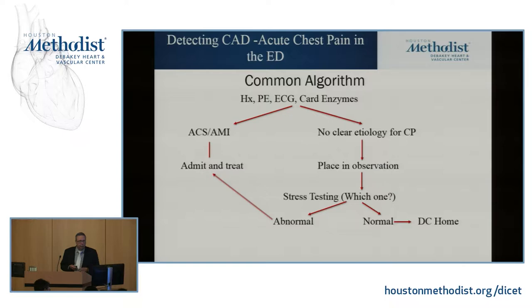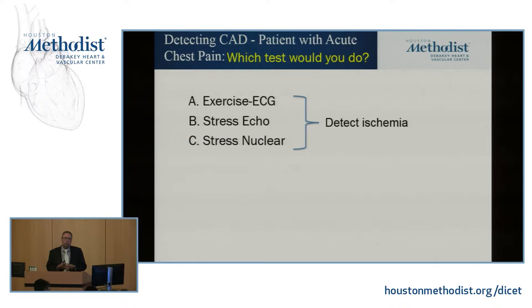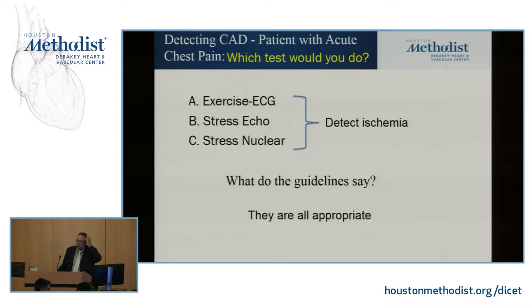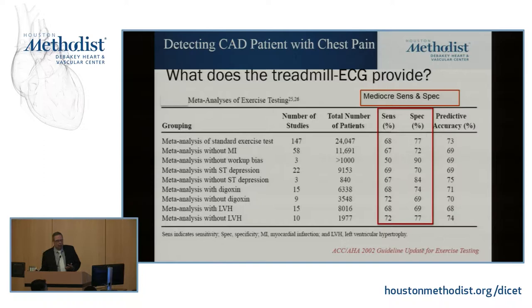So now comes the question: which stress test do you use? You have choices — a routine treadmill EKG, a stress echo, or a stress nuclear. What do the experts say? They're all appropriate. All three are perfectly appropriate according to guidelines, which makes it more confusing. Let's start with the treadmill EKG — this is your poor man's test. It costs around $100, so insurance companies love it, and they'll often try to negotiate to use that one instead of something else.